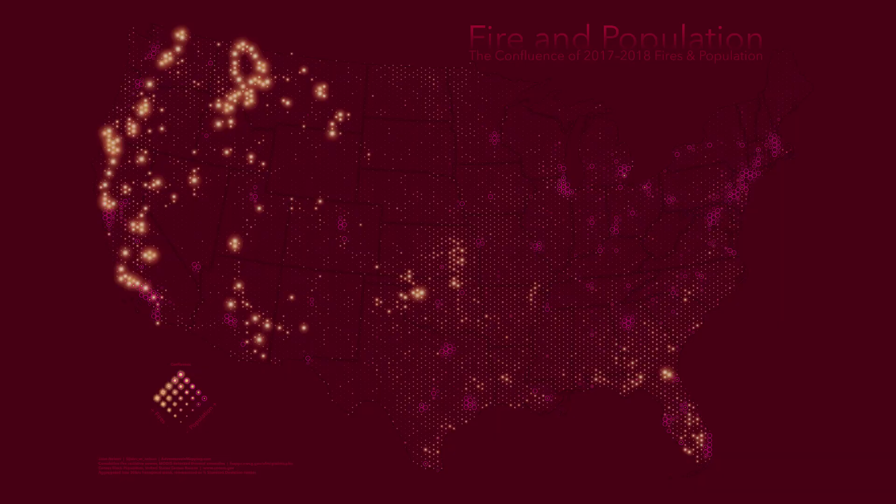Here is a bivariate map showing fires and population. Bivariate — meaning two variables, variate meaning variables. Two or more variables all at once. And when we say multivariate, that can mean bivariate, so two or more variables. But why would you even make one? To show perhaps a relationship between two or more different phenomena. So here I'm showing the relationship between instances of fire and where people live.